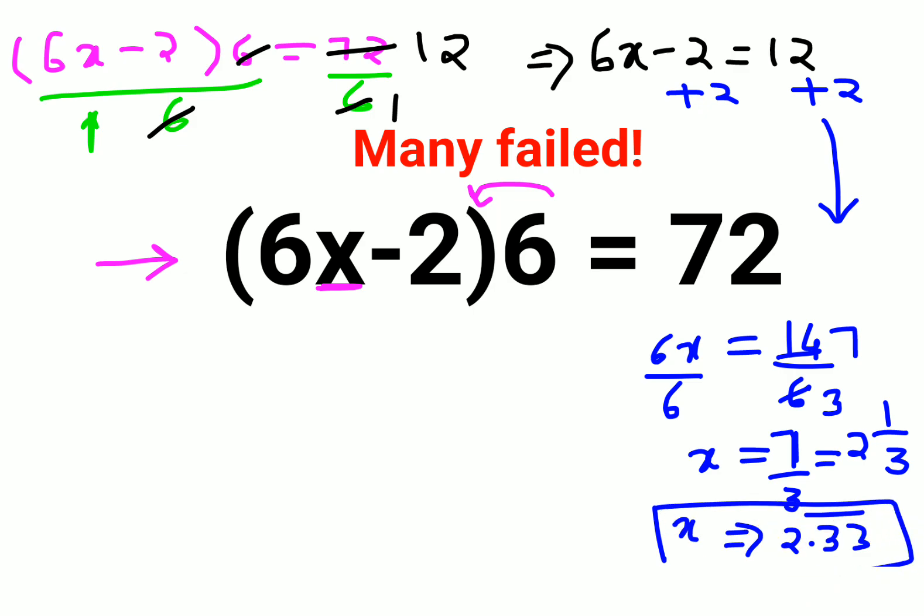Now in order to figure out whether you have done it right, we will try to put this particular value of 7 over here, over x. So we have 6 into x we will put, instead of x I will put 7 upon 3, 7 upon 3 minus 2. And let everything get multiplied to 6.